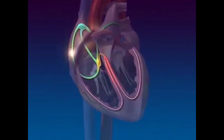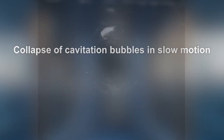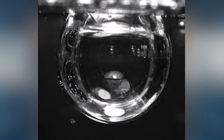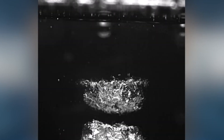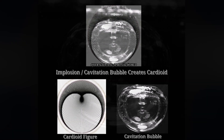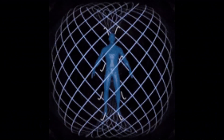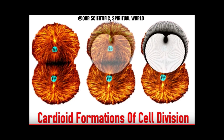Now let's think about the implosive physics of the heart as we take a look at this video of a bubble imploding or cavitating underwater in slow motion. If you look closely as this bubble implodes and turns inside out, you can see the underlying cardioid formation. Perhaps this could be another fractal link to the human body that we haven't yet explored.